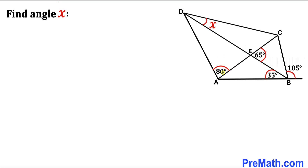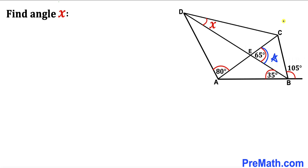Welcome to pre-math. In this video we have quadrilateral ABCD divided into four triangles. In triangle AED this angle is 80 degrees. In triangle CED this angle is X. In triangle ABE this angle is 35 degrees, whereas in triangle BCE this angle is 65 degrees, and moreover this angle outside is 105 degrees. Our task is to find the value of angle X.